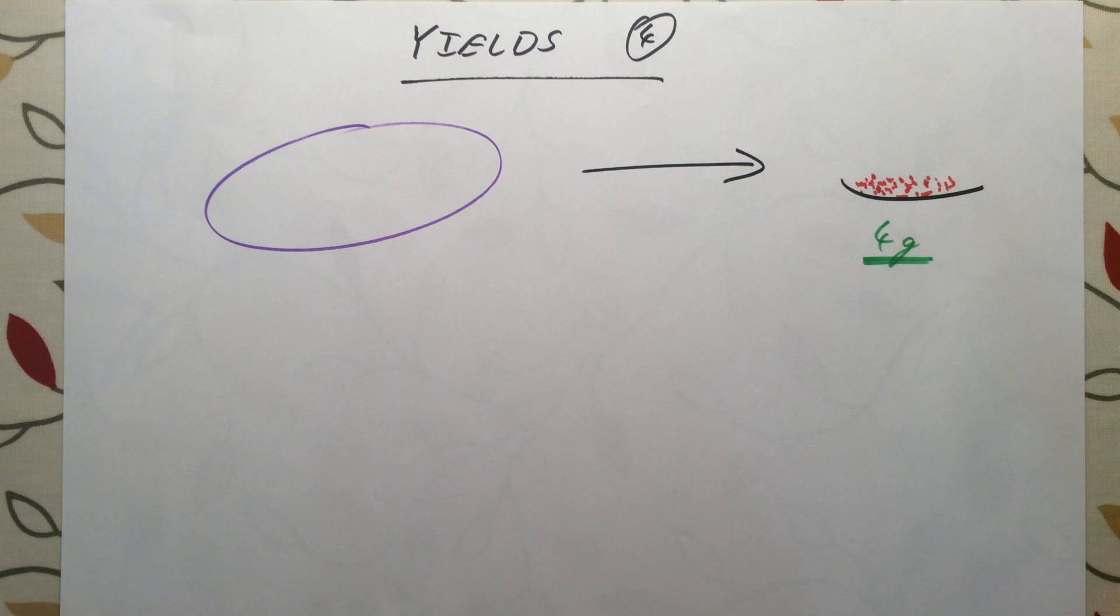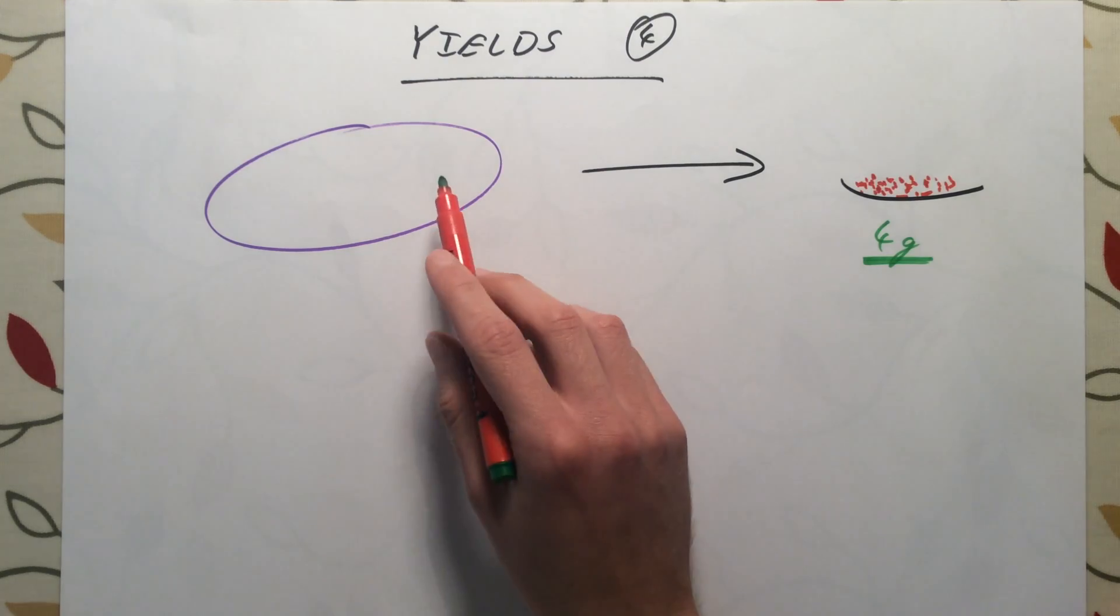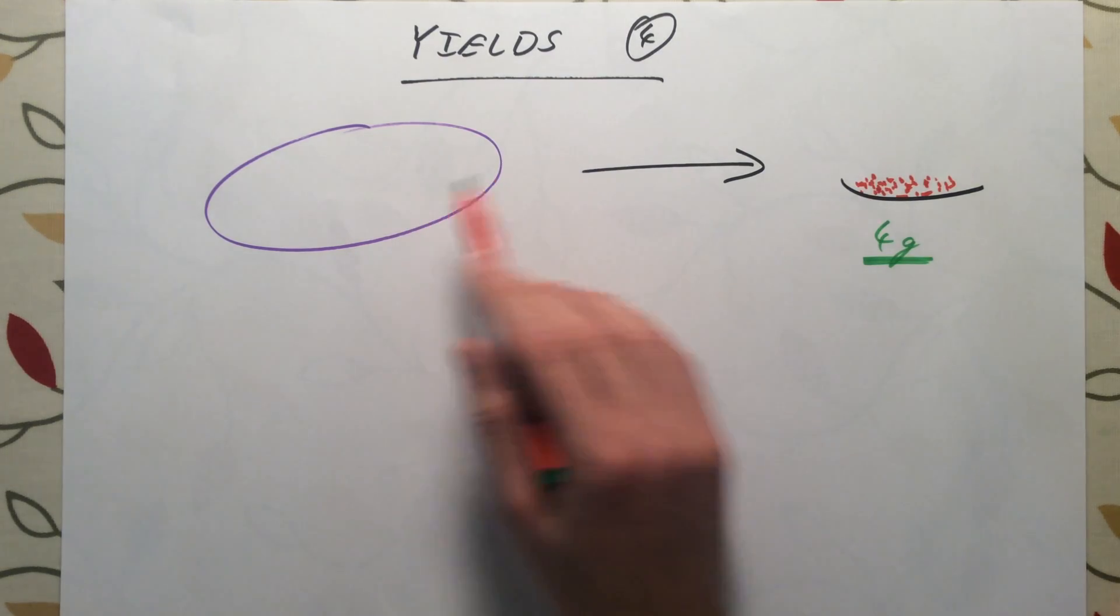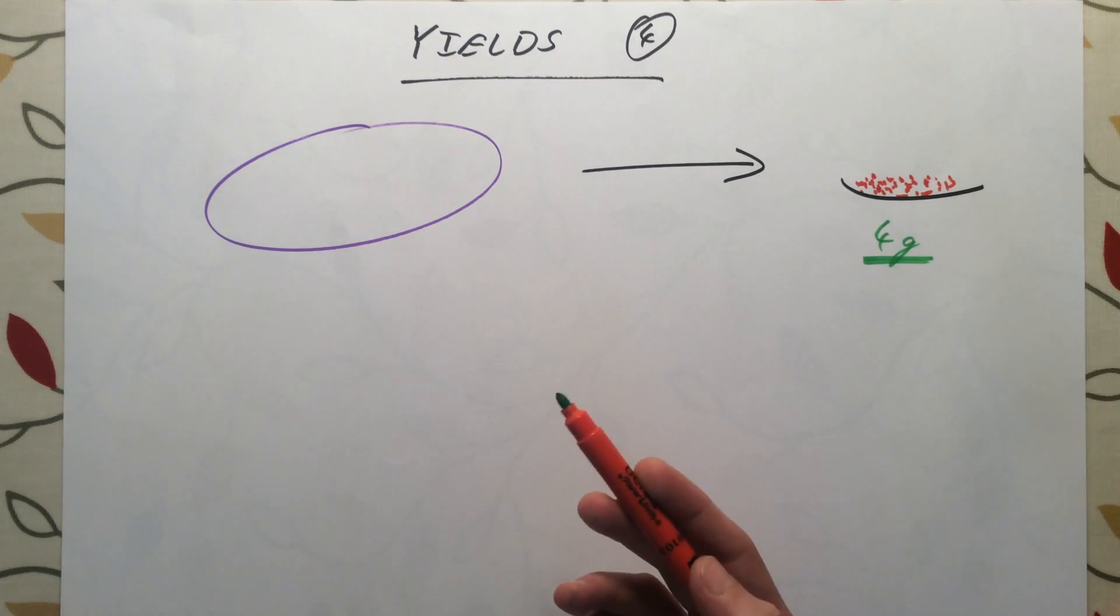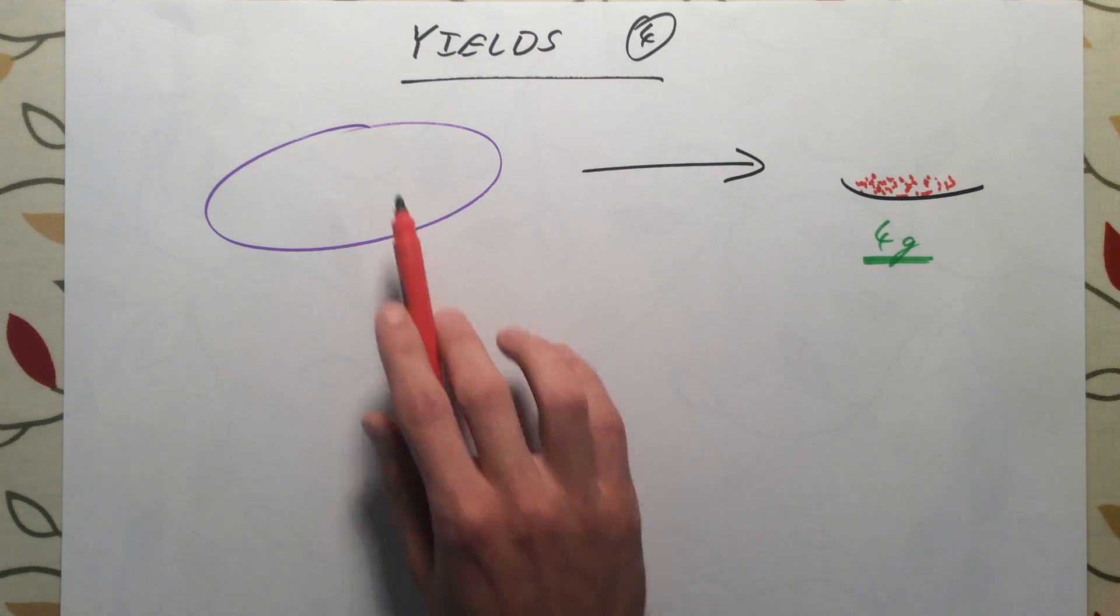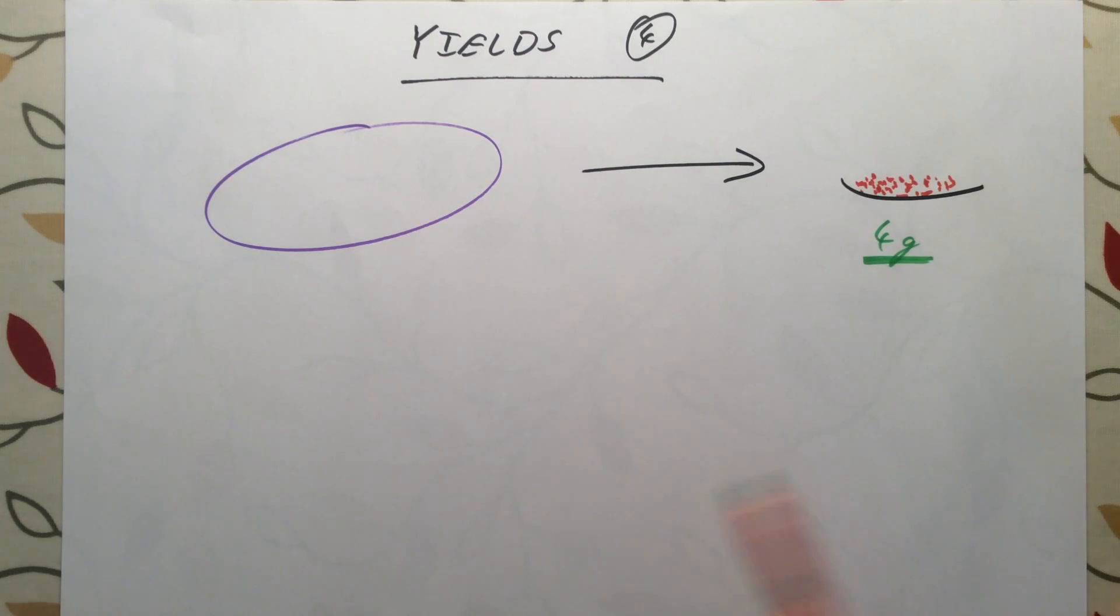Now in any chemical reaction it is impossible to get what we call a 100% yield. We never ever get exactly the amount out at the end that we should do based on the reaction that we're doing. If we did we would say we had a 100% yield. So we can do a calculation which we discussed in the previous video which was for higher tier only.